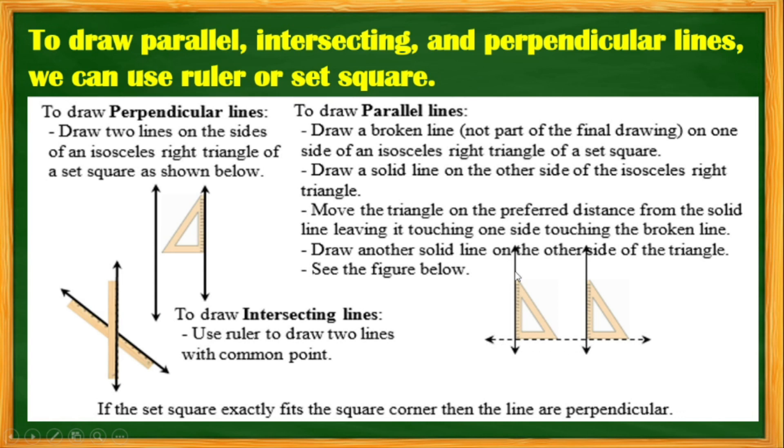The other side is for the solid line. Move the triangle on the proper distance from the solid line, leaving it touching one side, touching the broken line. The other one is touched with the broken line and draw again with the solid line. Draw again with the solid line on the other side of the triangle and see the figure below. This would be a parallel line.